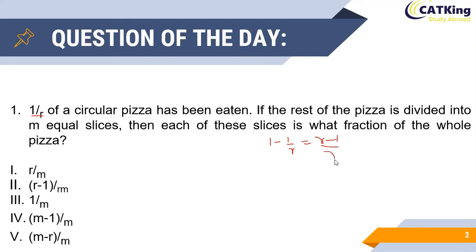Now it is given to us that this remaining pizza is divided into m equal slices. Hence each portion represents r minus 1 by r into 1 by m, that is each slice represents r minus 1 divided by rm fraction of the whole pizza. That is option 2 is the correct answer.